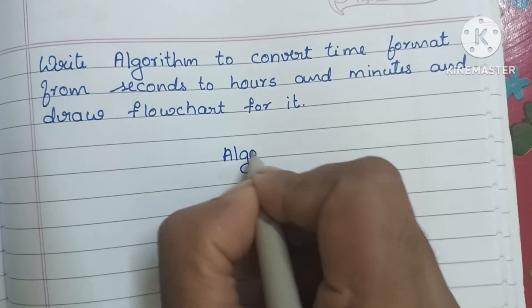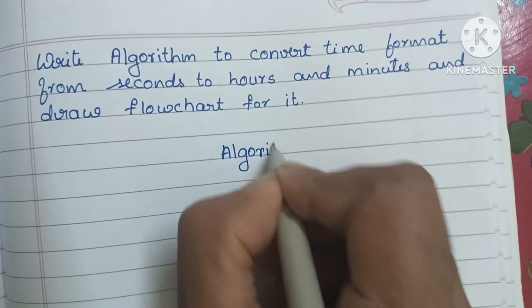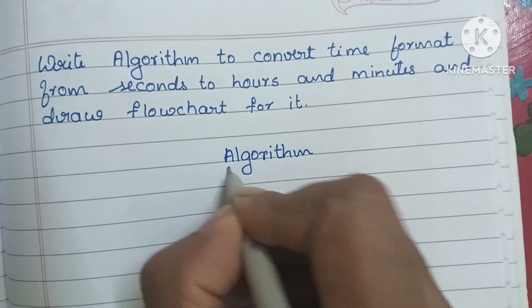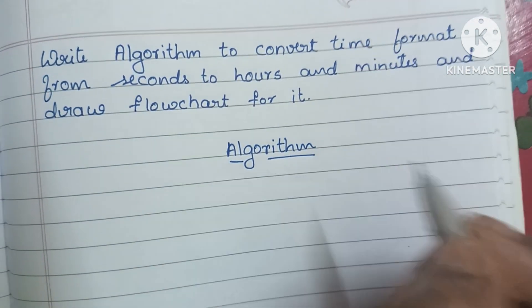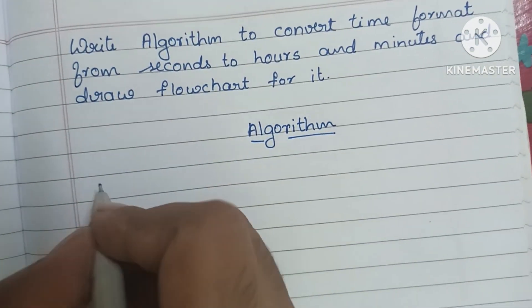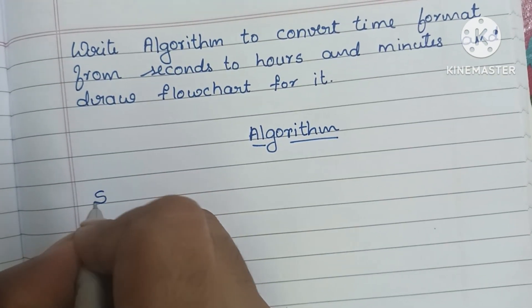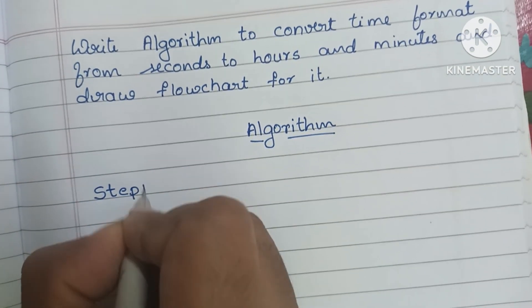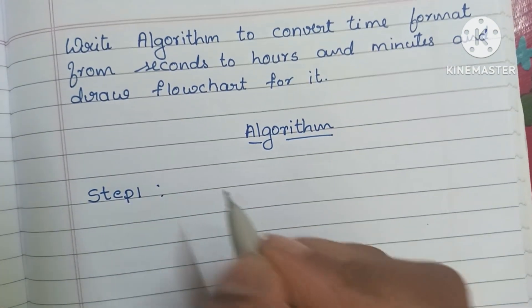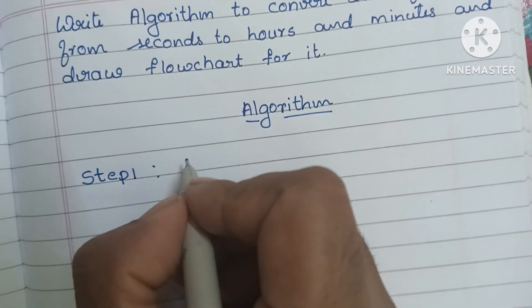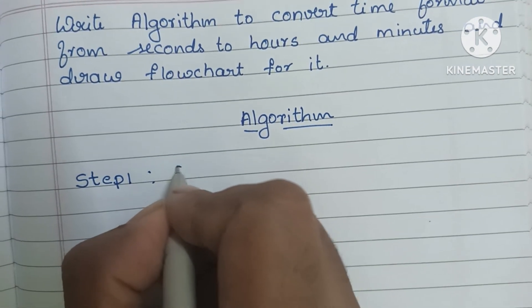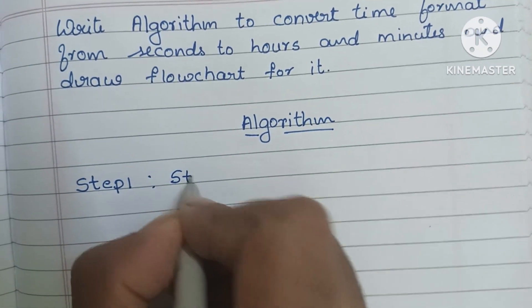Here we are going to write the algorithm. An algorithm is a step-by-step process to solve a problem. Step 1: an algorithm always starts with a start statement, so first we have to write the start statement.